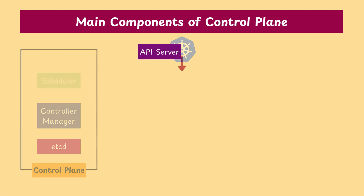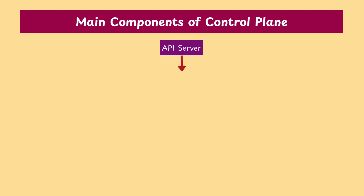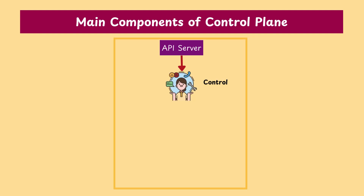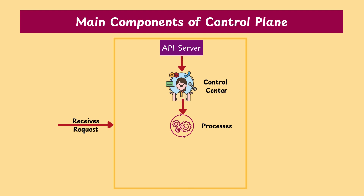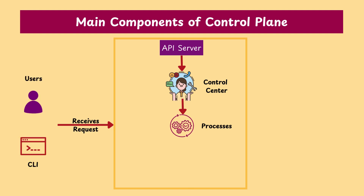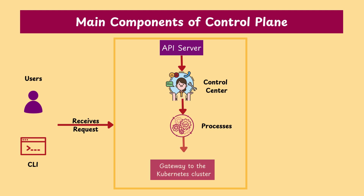API server — think of it like the control center. It receives and processes all requests from users, commands, or other components. It's the gateway to the Kubernetes cluster.